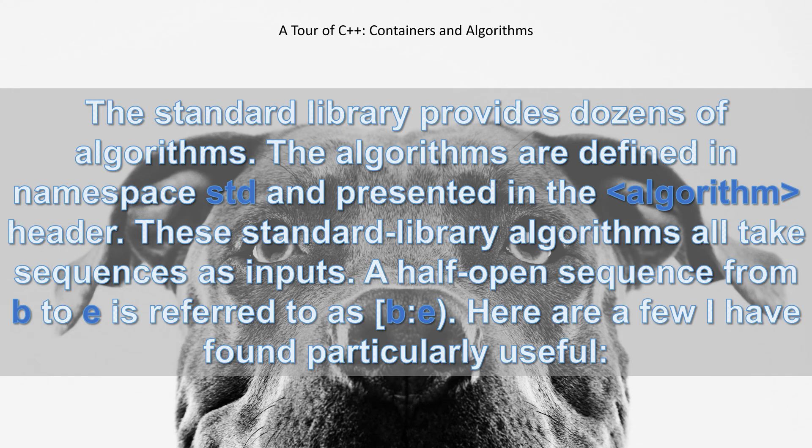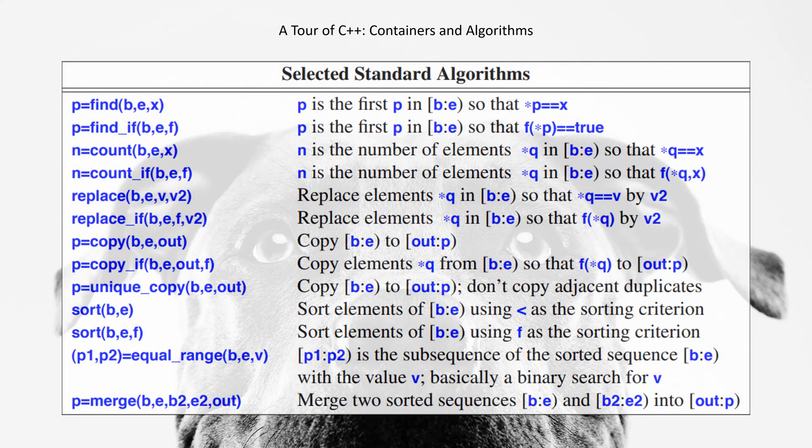Here are a few I have found particularly useful. Selected Standard Algorithms: p=find(b,e,x) - p is the first p in [b,e) so that *p equals x is true.